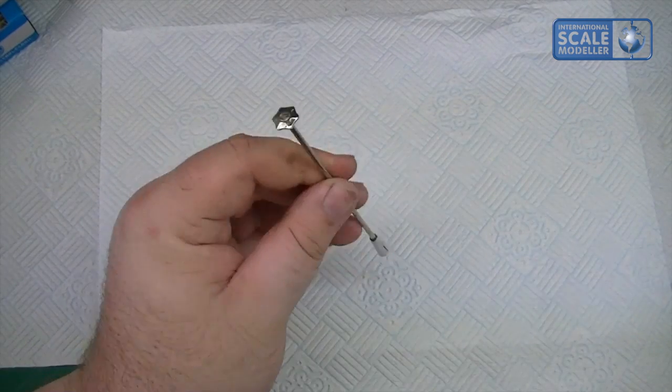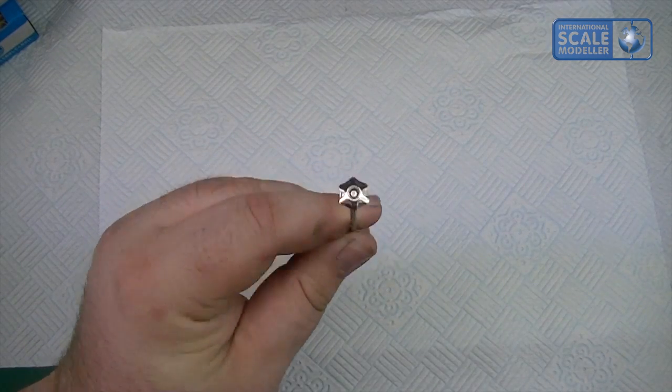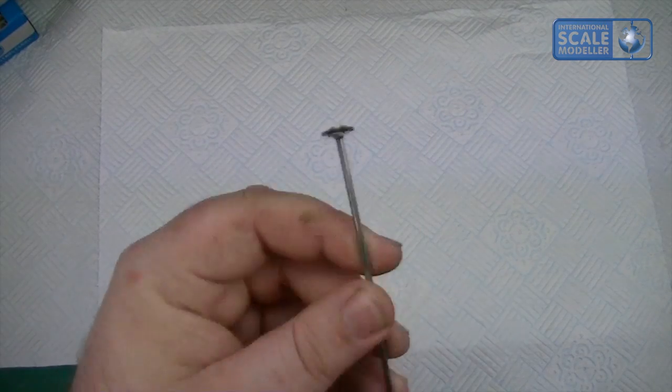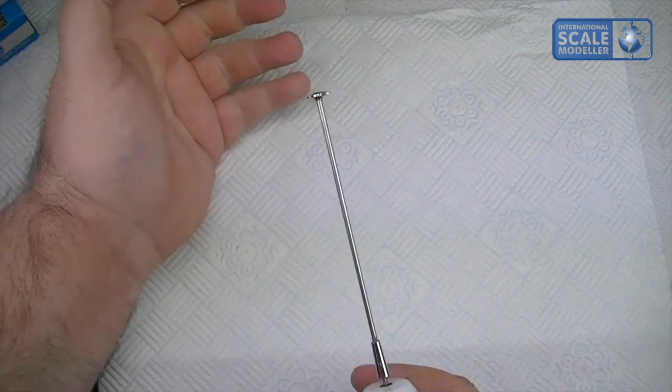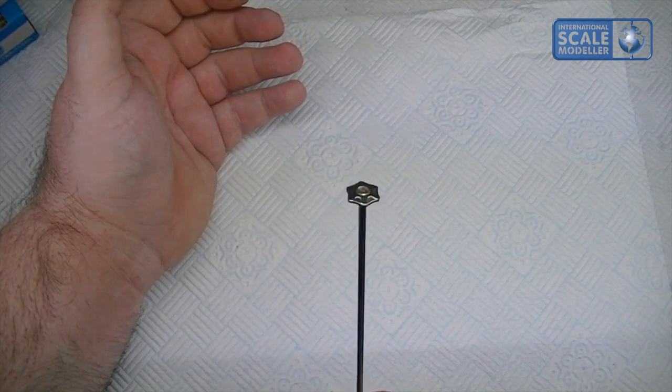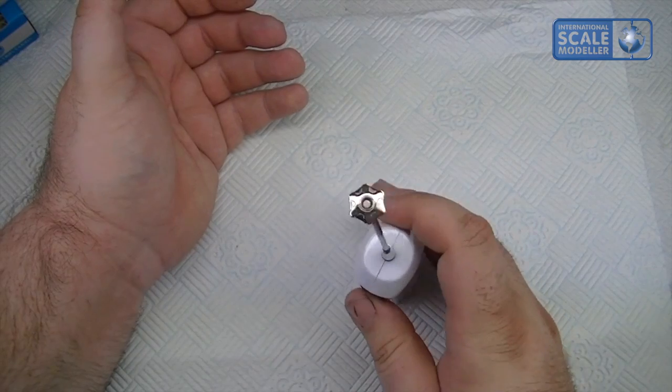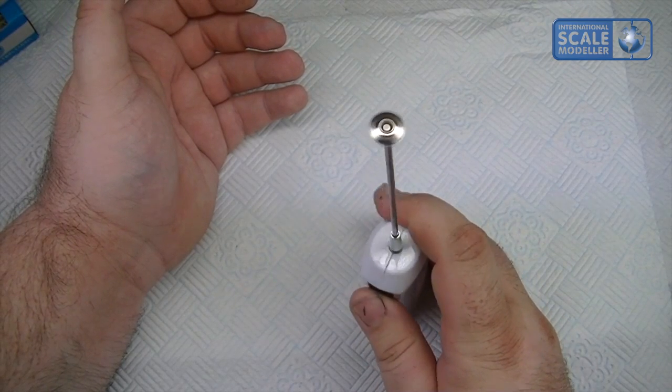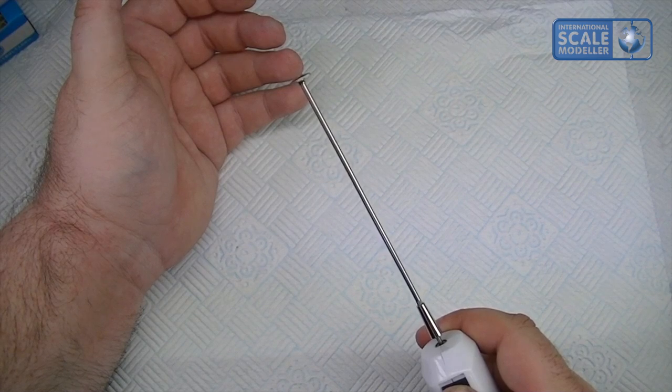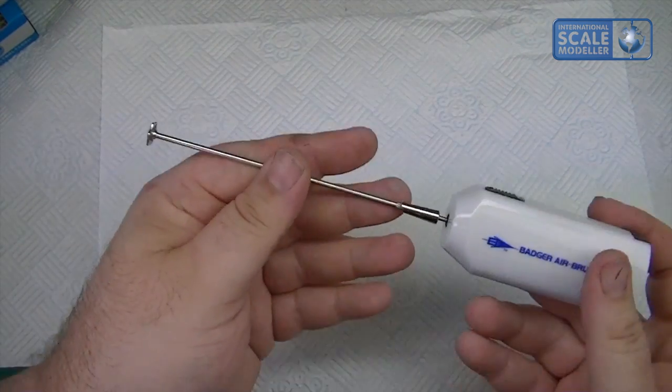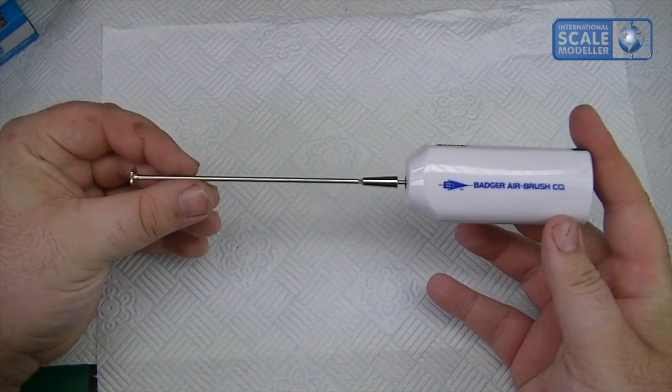And then we've got the paddle mixer, so it's just a basic metal paddle which is angled at the bottom, chamfered, and then it just fits in. So there we go, as simple as that. So there it is all assembled, batteries in.